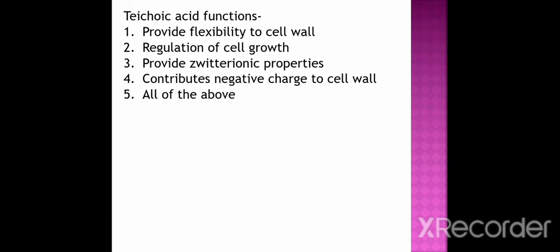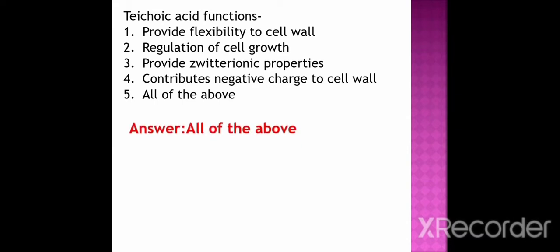Next question: teichoic acid functions are — option 1 provide flexibility to the cell wall, option 2 regulate cell growth, option 3 provide deuteronic properties, option 4 contribute negative charge to the cell wall, and option 5 is all of the above. The correct option is all of the above.